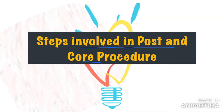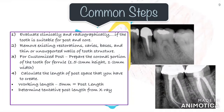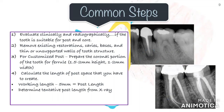Now we will discuss the steps involved in the entire process of post and core — for both customized post and prefabricated fiber post. First, the steps common to both: the first thing to do is evaluate clinically and radiographically if the tooth is suitable for post and core. Make sure that the tooth is not periodontally compromised, infected, or inflamed. Also check for any irregularities in the root configuration with an x-ray.